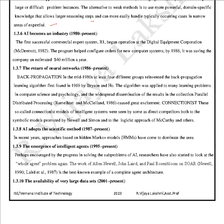AI became an industry standard from 1980 to present. The first successful commercial expert system for AI began operating at the Digital Equipment Corporation. The return of neural networks from 1986 to present: in the mid-1980s, at least four different groups reinvented the backpropagation learning algorithm, first found in 1969 by Bryson and Ho. The algorithm was applied to many learning problems, and widespread dissemination in 'Parallel Distributed Processing' caused great excitement among connectionists. These connectionist models were seen by some as competitors to symbolic models of Newell and Simon and the logicist approach of McCarthy.